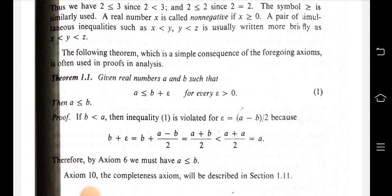Theorem 1.1: Given real numbers a and b such that a is less than or equal to b plus epsilon for every epsilon greater than 0, then a is less than or equal to b. Proof: If b is less than a, then the inequality is violated for epsilon equal to a minus b divided by 2.